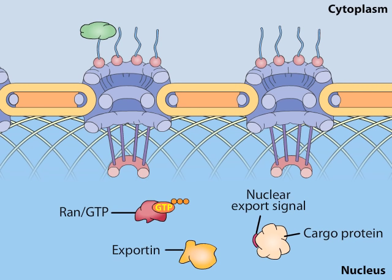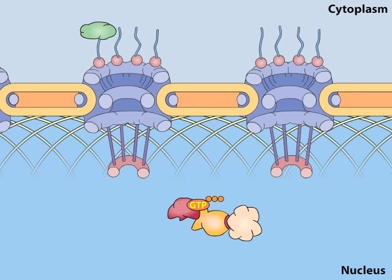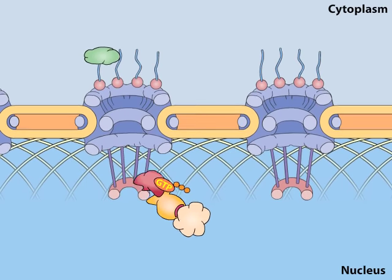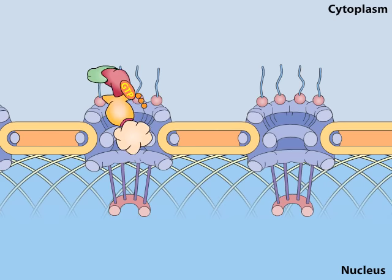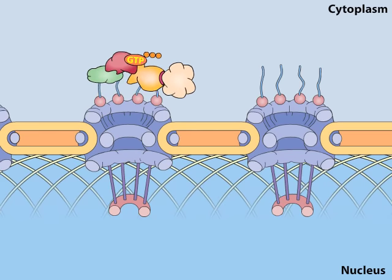RAN-GTP promotes the formation of stable complexes between exportins and their cargo proteins. Note that this same form of RAN does the opposite for importins and their cargoes. The effect of RAN-GTP binding on exportins dictates the movement of proteins containing nuclear export signals from the nucleus to the cytoplasm.